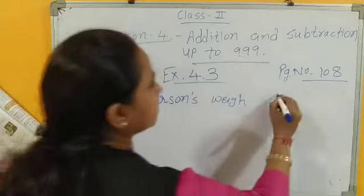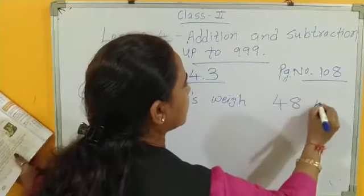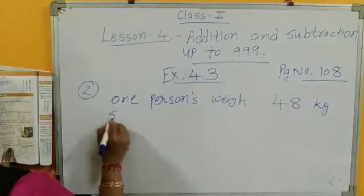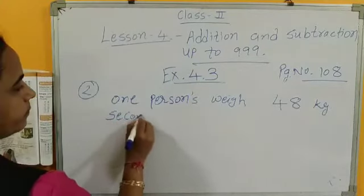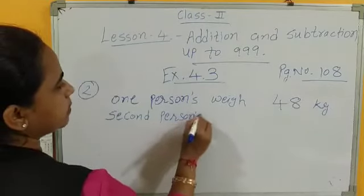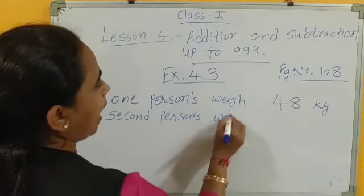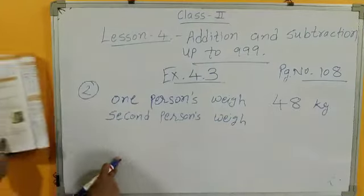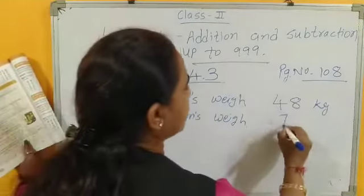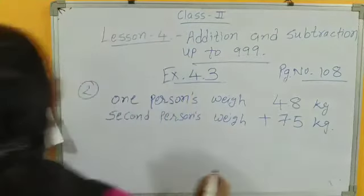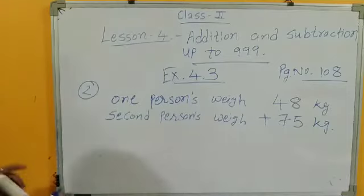One person weight, how much? 48 kg. And second person weight. You have to write like this in word problem. 75 kg plus. Now, addition.